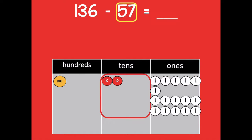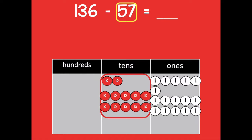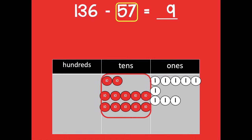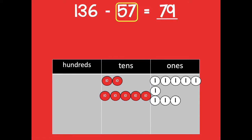Moving to the tens place — I have two tens, but 57 has five tens, so I need to do more unbundling. I'll go to the hundreds place and unbundle that hundred into 10 tens, because 10 tens equals 100. Now I have plenty of tens to subtract. I subtract seven ones and I'm left with nine ones. Then I subtract five tens and I'm left with seven tens. There are no hundreds to subtract since I used that hundred to decompose. So 136 minus 57 equals 79.